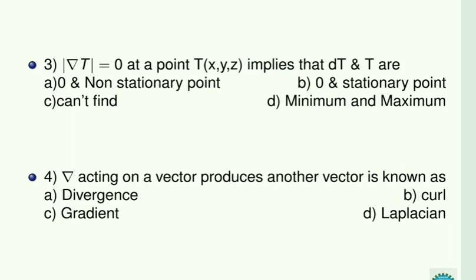Next question: modulus of ∇T is equal to 0 at a point T(x, y, z) — this implies what about dT? The modulus of ∇T is the magnitude of the gradient. So magnitude of gradient is 0 at a particular point. We know that the gradient talks about maximum rate of change. When that maximum change is 0, if there is no change, then it is a stationary point. So the scalar T must be stationary — only then can we say the maximum change is 0.